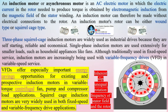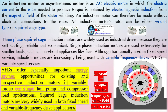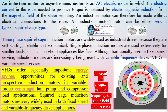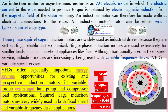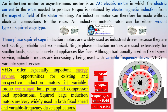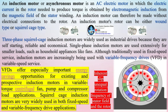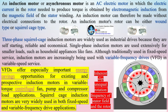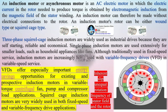Single-phase induction motors are used extensively for smaller loads, such as household appliances like fans. Although traditionally used in fixed speed service, induction motors are increasingly being used with variable frequency drives (VFD) in variable speed service. VFDs offer especially important energy savings for existing and prospective induction motors in variable torque centrifugal fan, pump, and compressor load applications. Squirrel cage induction motors are very widely used in both fixed speed and variable frequency drive applications.